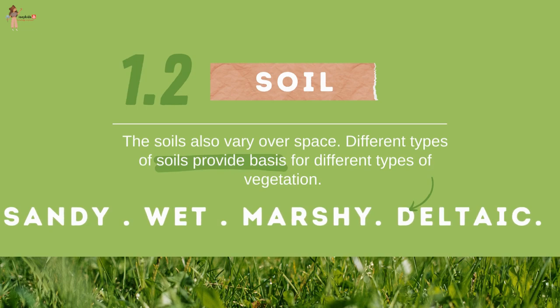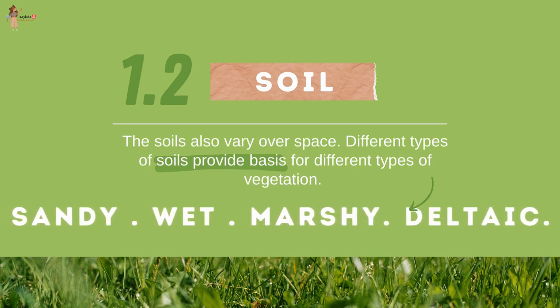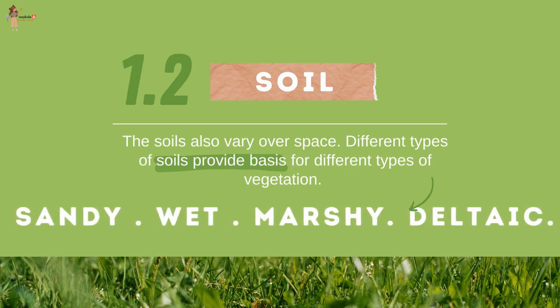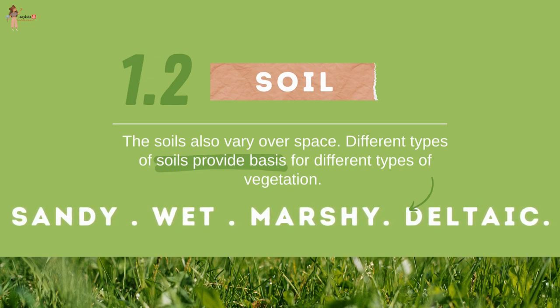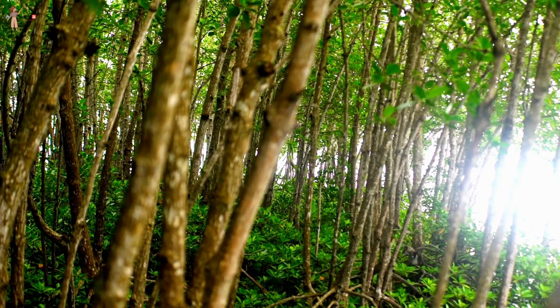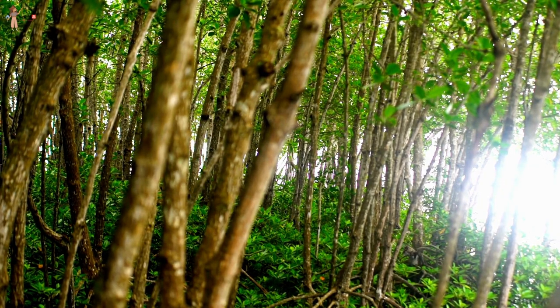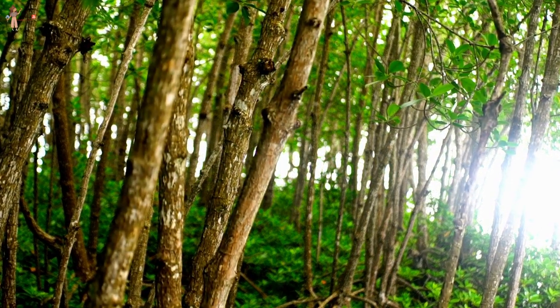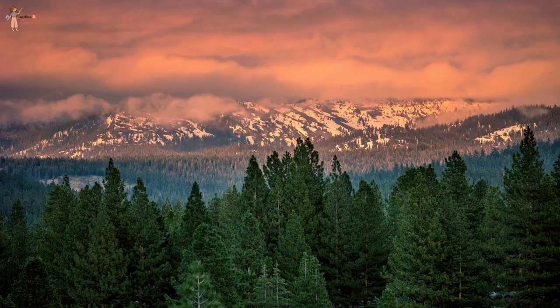Soil also varies over space. Different types of soils provide the basis for different types of vegetation. The sandy soils of the desert support cactus and thorny bushes, while wet marshy deltaic soils support mangroves and deltaic vegetation. Hill slopes with some depth of soil have conical trees.